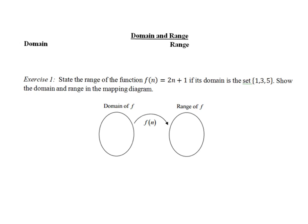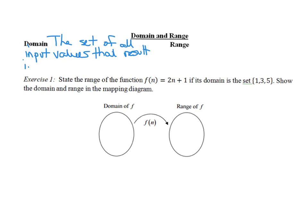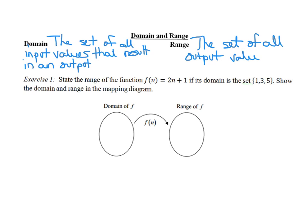This brings us to the definitions for domain and range. The domain should be the set of all input values that result in an output, so the domain is really just the set of all x values for your function. The range is the set of all output values — this of course is the set of all y values for our function. So we're going to practice finding domain and range in the next few exercises.